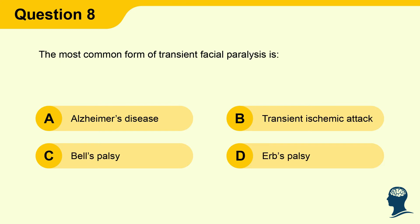Question 8: The most common form of transient facial paralysis is: A) Alzheimer's disease, B) Transient ischemic attack, C) Bell's palsy, D) Herpes palsy.